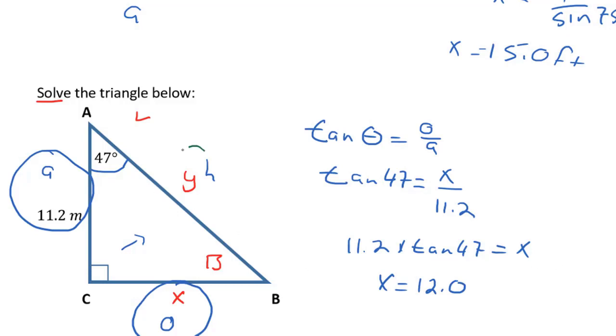Next, let's calculate y. Now y is the hypotenuse. I'm going to stick with angle 47 here as my focus angle, and that means that the adjacent is still 11.2. So I need a trig function that relates adjacent and hypotenuse, and that's cosine.